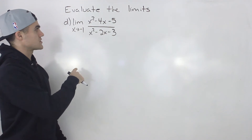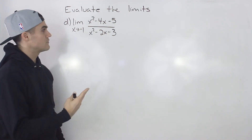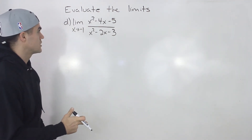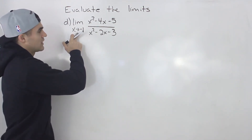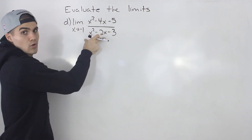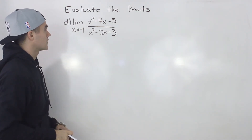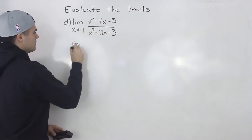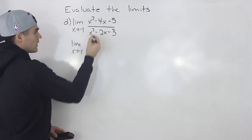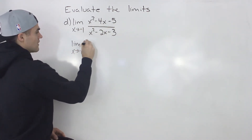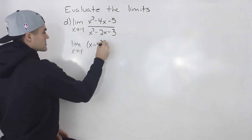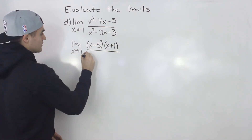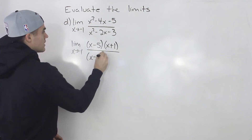Finally, the last one: the limit as x approaches −1 of (x² − 4x − 5) over (x² − 2x − 3). First thing — can you make a direct substitution? Plugging in x = −1 gives us 0 over 0, so that won't work. Next thing: can you factor? We can factor both the numerator and denominator. x² − 4x − 5 factors into (x − 5)(x + 1), and x² − 2x − 3 factors into (x − 3)(x + 1).